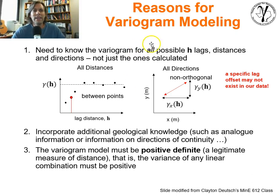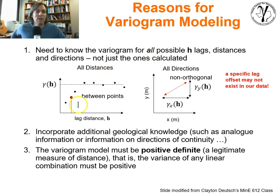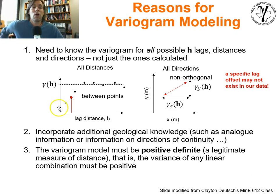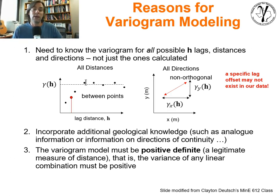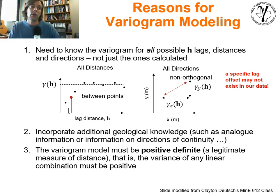So why do we need to do variogram modeling? There are two points. The first is that we need to know the spatial continuity for all possible lag distances. When we calculated the variogram, we specifically plotted the experimental variogram as points. We know something about spatial continuity at those points, but it's not providing information between all the points. We need to go between all the points because, when we are estimating and simulating, we're going to encounter data configurations at distances of any lag, not just the ones at which we calculated.